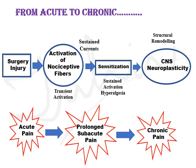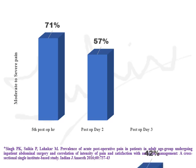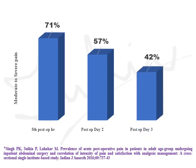Another important aspect is that acute pain can convert into chronic pain if we don't treat it optimally. Following surgery, there is activation of nociceptive fibers, which ultimately leads to sensitization and structural remodeling of the CNS — known as CNS neuroplasticity. Acute pain ultimately converts into prolonged subacute pain, and if we don't treat it, it leads to chronic pain. Looking at Indian data, pain of moderate to severe nature up to post-op day 3 occurs in almost 42 to 71% of adult patients undergoing abdominal surgeries.